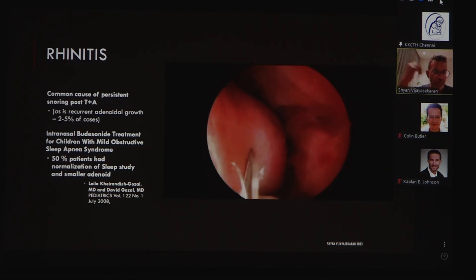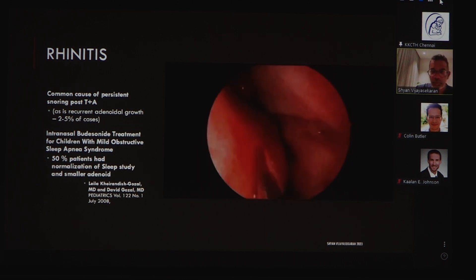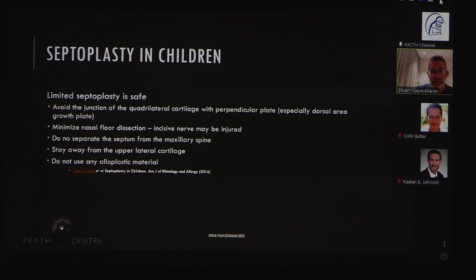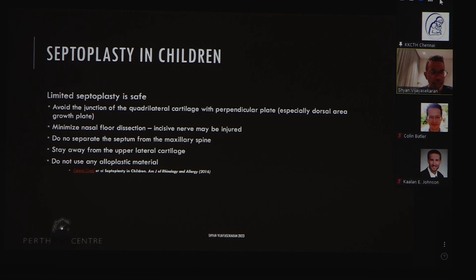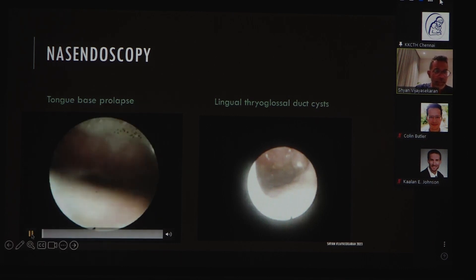For treating rhinitis, we've talked about nasal steroids and montelukast, but don't forget turbinate reduction procedures. Various types of turbinate reduction procedures may be employed to reduce turbinate hypertrophy, and these can play a pivotal role in reducing OSA. Regarding septoplasty in children — in cases of severe septal deviation, a limited septoplasty is considered safe. We should stay away from areas such as the junction of the quadrilateral cartilage and the perpendicular plate where there is a growth plate, and the floor of the nose, but limited septoplasty has been shown to be safe in children.